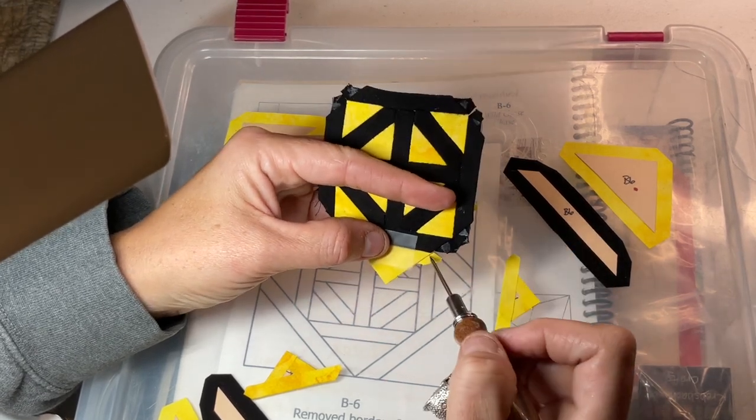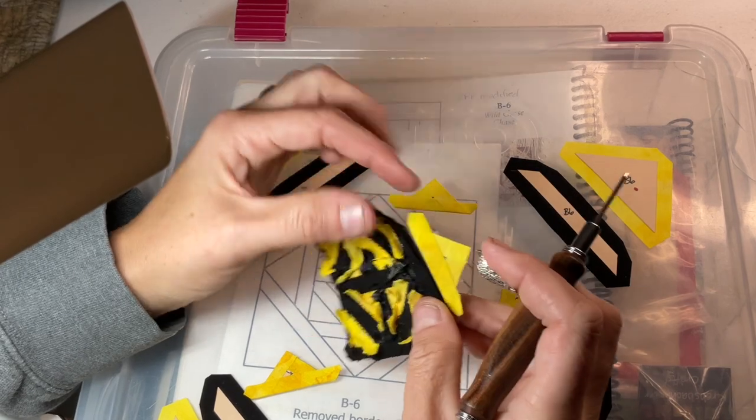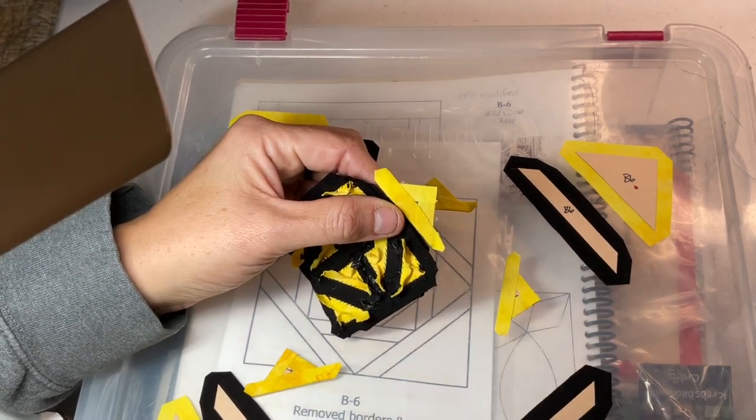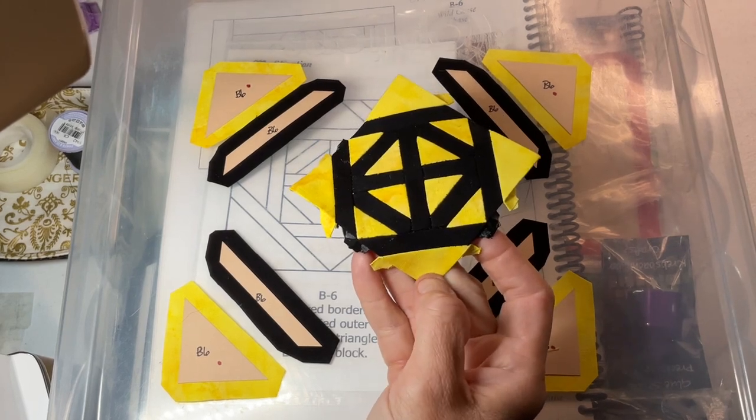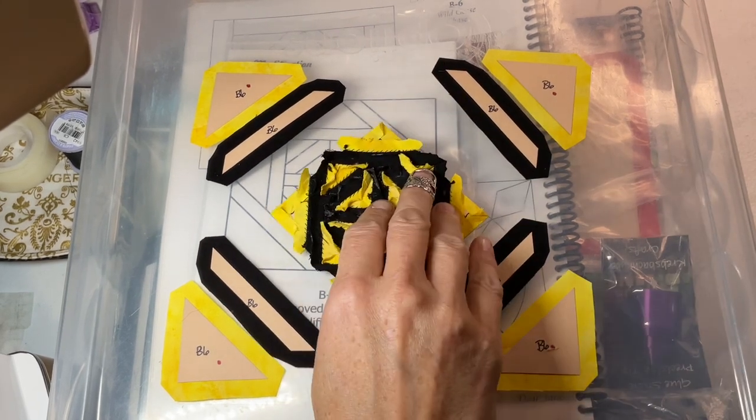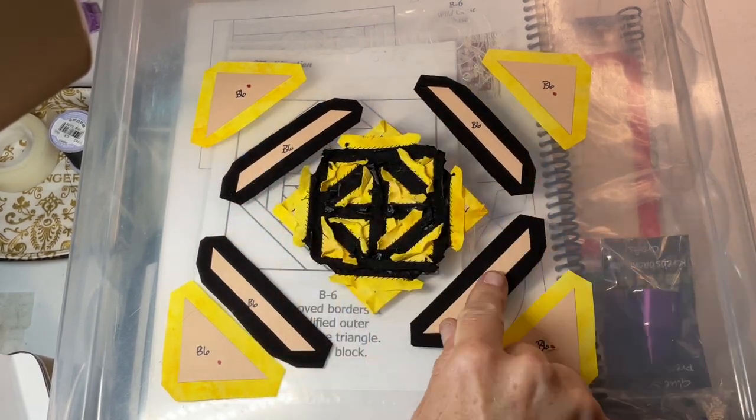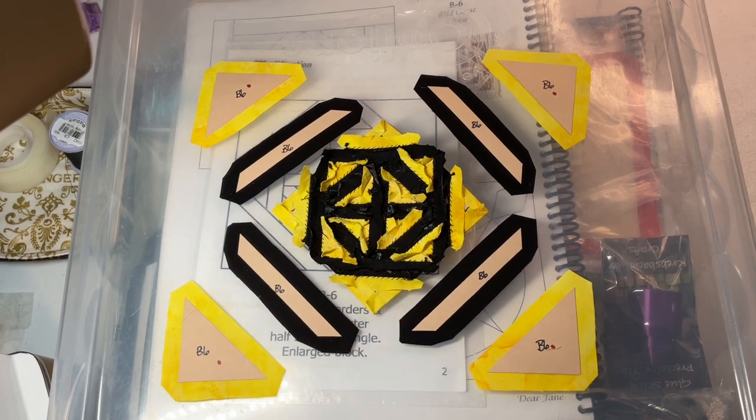I've attached my yellow triangles as the next layer. Now we're going to go to the next round of black. I will baste and attach those next.